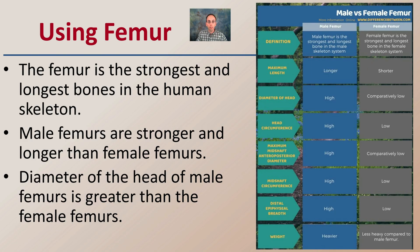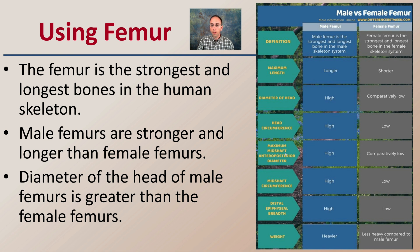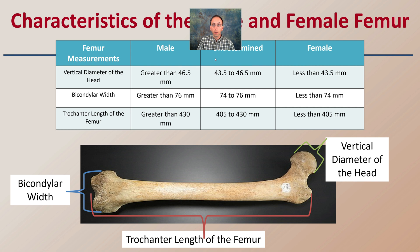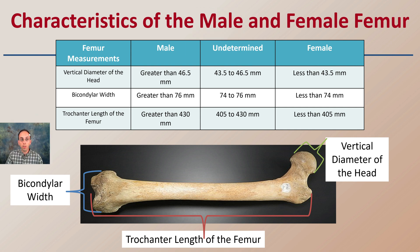When we use the femur — the strongest and longest bone of the human skeleton — male femurs are stronger and longer than female femurs, and the diameter of the head of the male femur is greater than that of the female. When comparing general length, diameter, head circumference, and weight, the male tends to be a little larger and bulkier relative to the female. For the male and female femur characteristics, the vertical diameter of the head, bicondylar width, and trochanter length are the key measurements taken for comparison, and these are referenced against a database to help determine the sex of the individual.